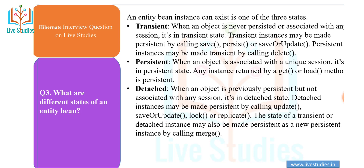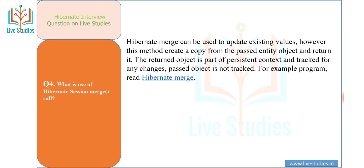A detached instance may be made persistent again by calling update(), saveOrUpdate(), lock(), or replicate() methods. The state of a transient or detached instance may also be made persistent as a new persistence instance by calling the merge() method.